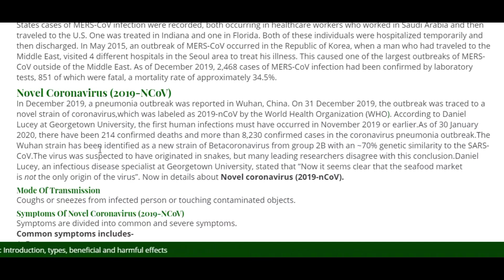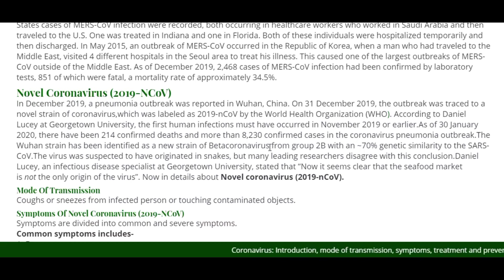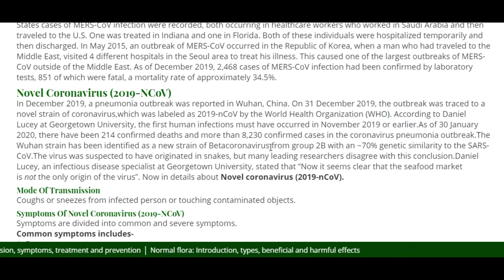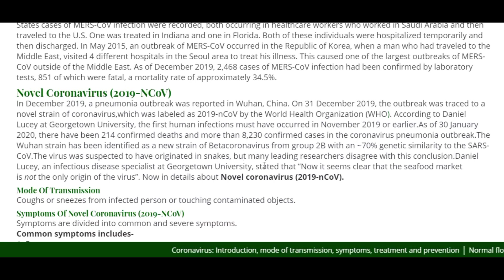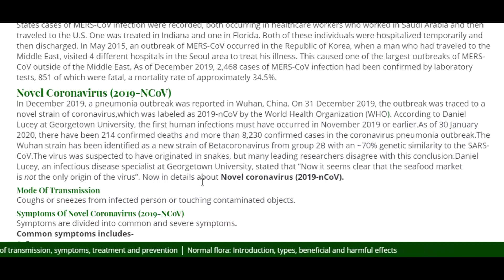The Wuhan strain has been identified as a new strain of beta coronavirus — from group 2b with nearly 70% genetic similarity to SARS-CoV. This virus was suspected to have originated in snakes, but many leading researchers disagree with this conclusion. Daniel Lucey, an infectious disease specialist at Georgetown University, stated that it now seems clear that the seafood market is not the only origin of the virus.